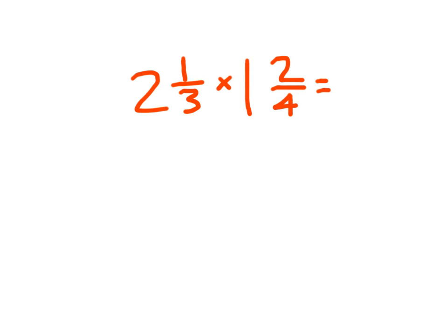Here's another problem: 2 and 1 third times 1 and 2 fourths. Again, I'm going to look at each of those mixed numbers and think about how I write them as improper fractions. For 2 and 1 third, each whole is worth 3 thirds, so 2 wholes is worth 6 thirds. Putting it together with 1 third, I get 7 thirds. This one whole is worth 4 fourths, so putting it together with 2 fourths, I get 6 fourths.